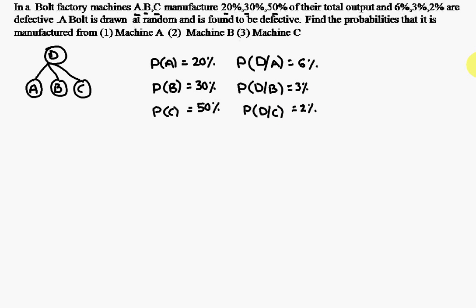The questions ask us to find the probability that a bolt is manufactured from machine A, machine B, and machine C respectively. Before that, a bolt is drawn and is found to be defective.